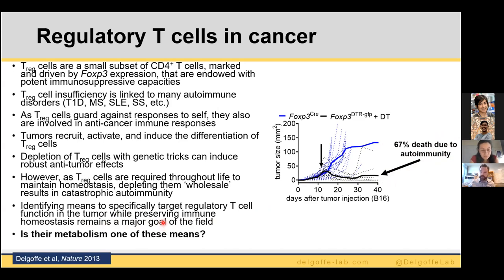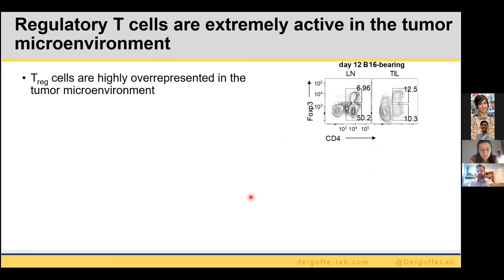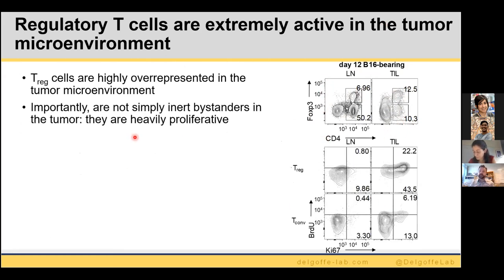We are asking in the lab whether metabolism is one means to specifically target Tregs. The important thing to understand is that Tregs are not idle. They are highly overrepresented in tumor microenvironments — in a typical B16 melanoma, more than half the T-cells are regulatory, compared to being a very small population in peripheral lymphoid organs.